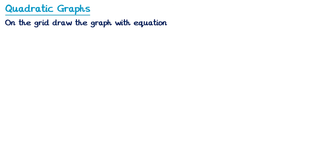In this video we're going to look at quadratic graphs. A question might say: on the grid, draw the graph with equation y equals x squared plus 2x plus 3 for x values between negative 4 and 2.